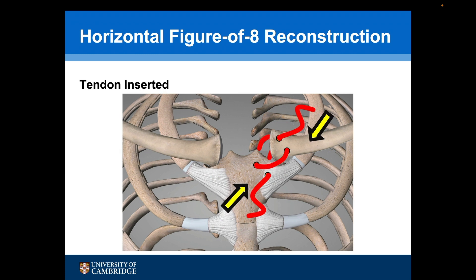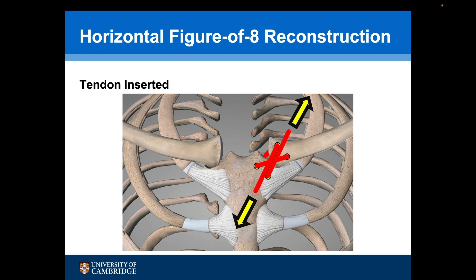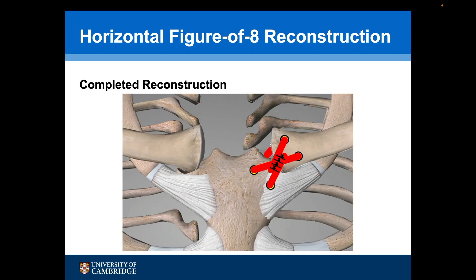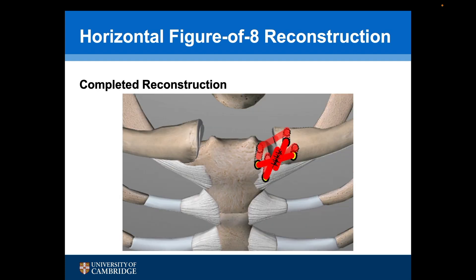Having passed the tendon through the drill holes, the ends of the tendon are then pulled together, which reduces the joint. The joint is then cycled and the tendons tensioned. The tendon ends are then sutured together. This is the final figure-of-8 configuration.